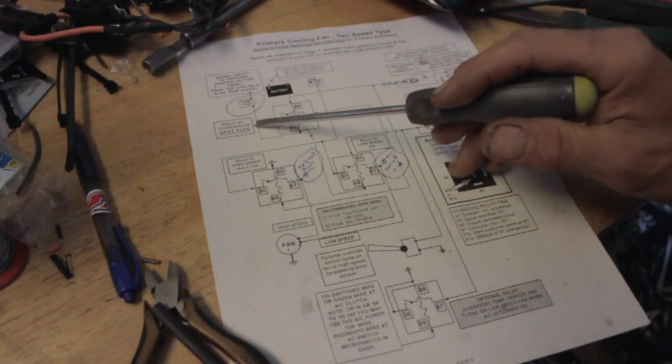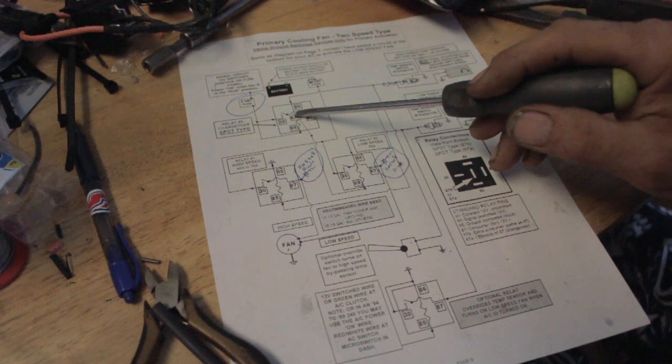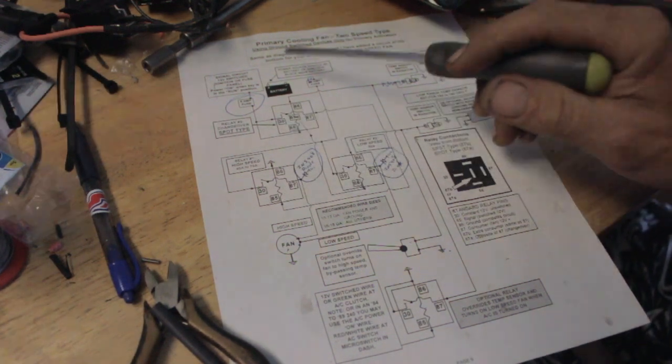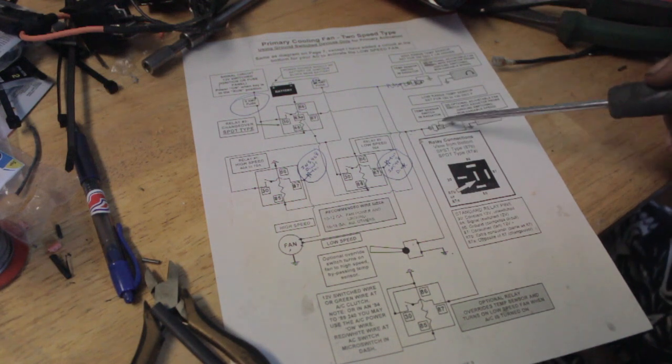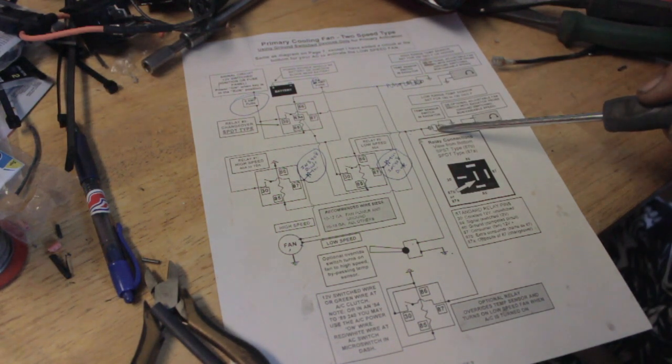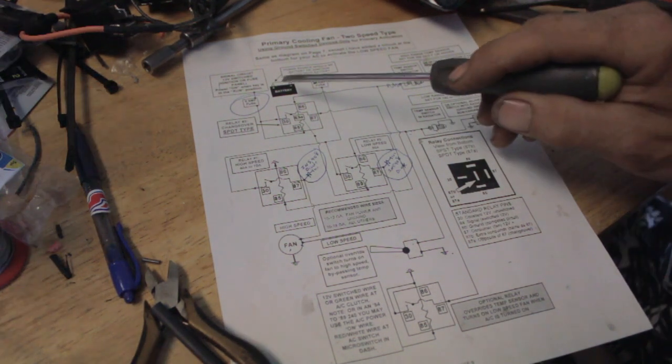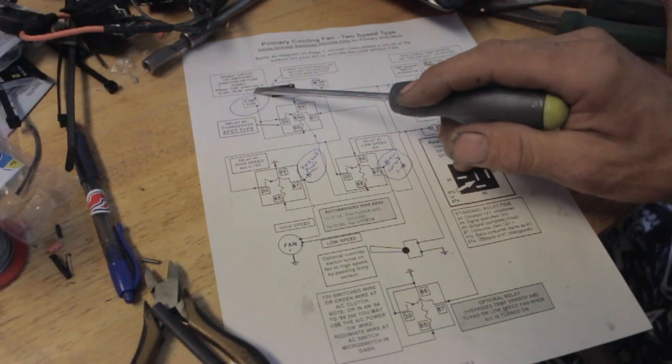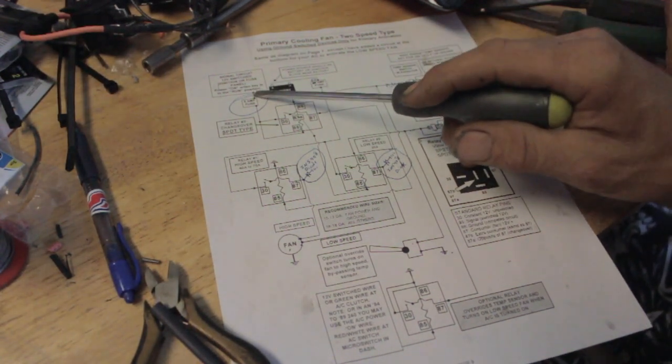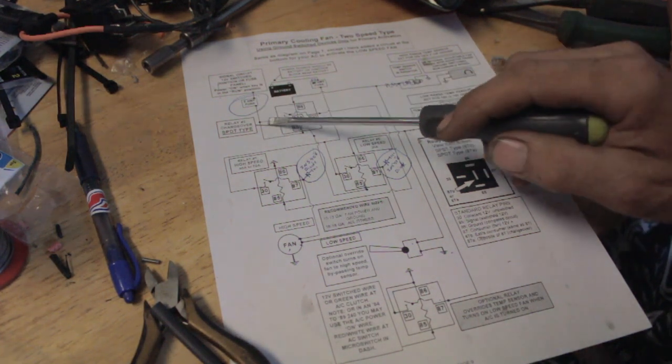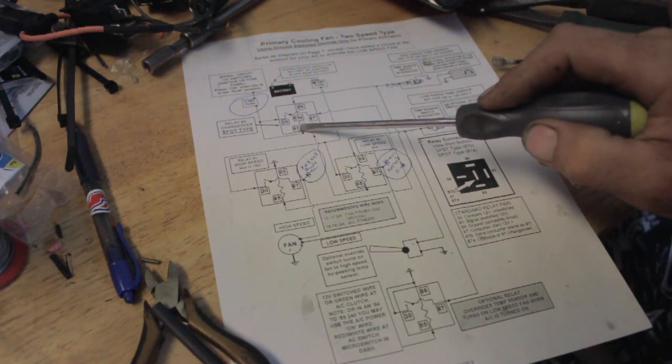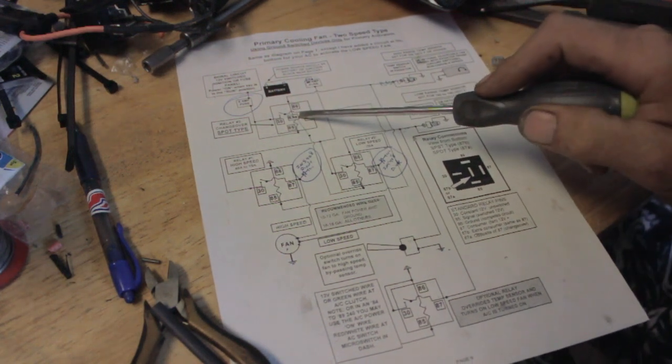So what the diode does is whenever this opens up, it takes this extra energy that the fan is making on its own and it sends it to the ground and dissipates it. So it doesn't dissipate it inside the relay, it dissipates it out here on the ground, which extends the life of the relay. This is your control wiring right here. This is what's going to make your relays open and close. We're using what's called a ground switch device, which means our sensor opens and closes the ground, not the hot.